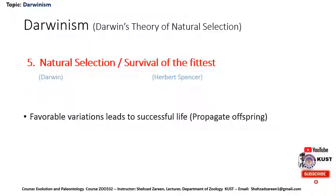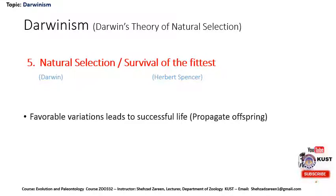An important point of Darwin's theory is natural selection, or survival of the fittest. The term natural selection was coined by Darwin, while survival of the fittest was coined by Herbert Spencer. It states that those organisms which have the capability to fit into the environment will survive and propagate their offspring, while those which do not have the ability to survive in the tough environment will be eliminated. Simply put, nature selects the fittest organisms for the environment.